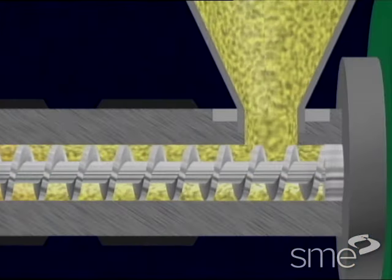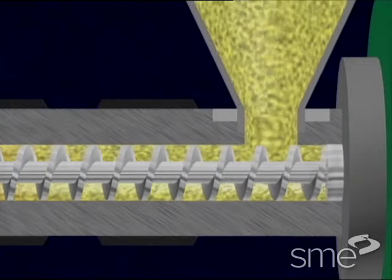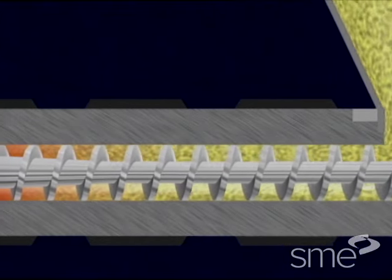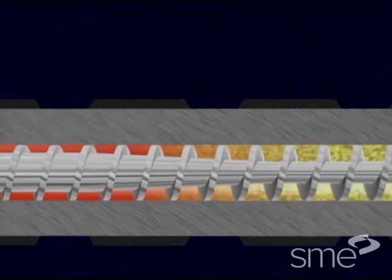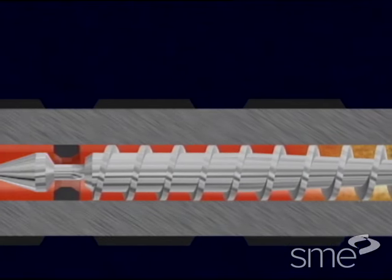As the resin enters the injection barrel, it is driven forward by the rotation of the screw, which is powered by the hydraulic motor. The resin plasticizes or melts as the turning screw drags it towards the nozzle end. This is referred to as drag flow.